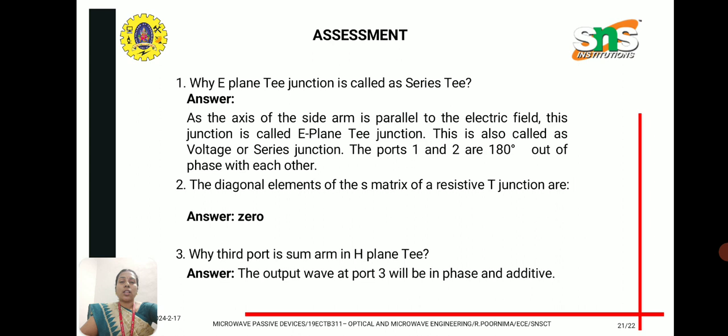For a small assessment: Why is the E-plane T junction called a series T? The answer is that the axis of the side arm is parallel to the electric field, making it an E-plane T junction. It is also called a voltage or series junction where port 1 and port 2 are 180 degrees out of phase with each other. The third arm is attached along the broader dimension of the E-plane T, where the signal is divided among the two ports equally and in opposite phase.